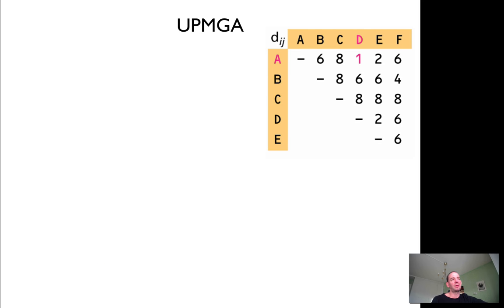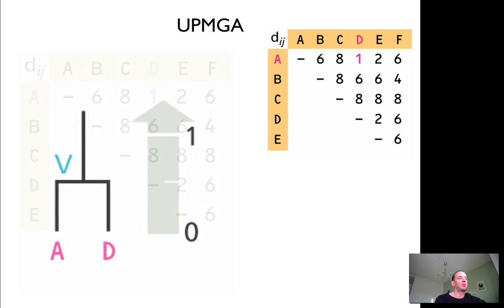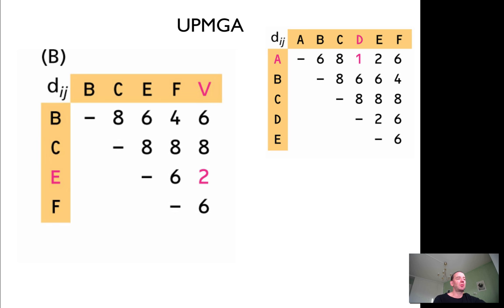One method is UPGMA. What you do is start with a set of five or six species, and you join the two closest species together. For example, A and D had a distance of 1, so that's easy. You make a new branch called V between these two. Basically, you take the closest sequences together and align them. Then you calculate the distance from V to another species, like B. It's just the average distance of D and A. For B, it's 6 because D had a distance of 6, and so did A.